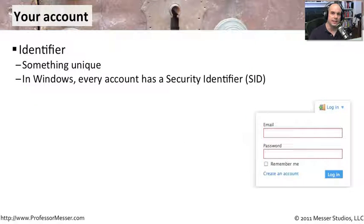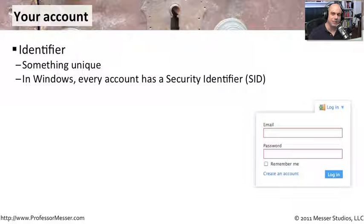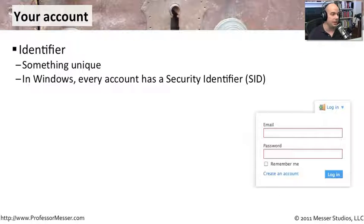To facilitate the identification and authorization process, everyone is usually given a username — a set of characters representing who we are as we log into the network. For example, I might log in as jmesser, my first initial and last name. Behind the scenes, in Windows and other operating systems, that username is also associated with a Security ID, which is a very unique identifier. Nobody else can have that same Security ID at a given time.